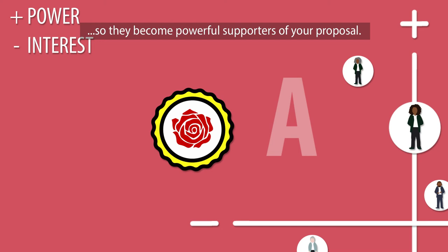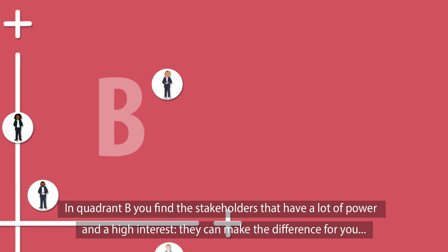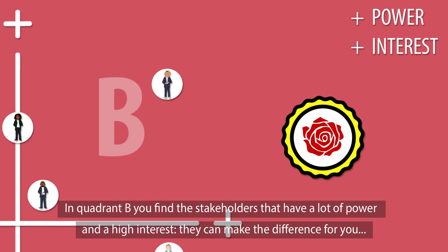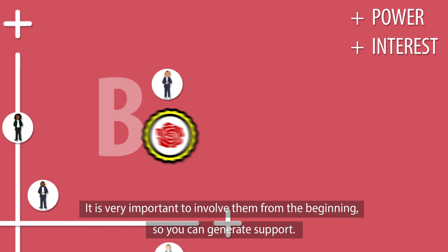In quadrant B you find the stakeholders that have a lot of power and high interest. They can make the difference for you both in a positive and in a negative way. It is very important to involve them from the beginning so you can generate support.